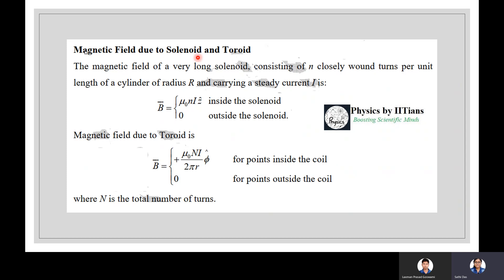The magnetic field for a long solenoid with n turns per unit length, radius R, carrying steady current I is B = μ₀nI ẑ inside and B = 0 outside. For a toroid, B = μ₀nI/(2πr) φ̂ inside the coil and B = 0 outside, where N is the total number of turns.